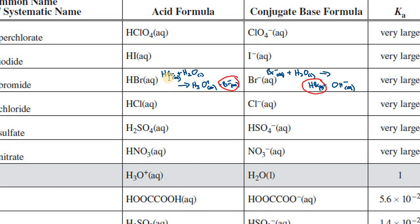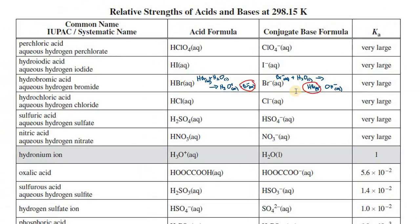So if this is a strong acid, that means this reaction happens very very well. That means this must be a weak base. So this reaction doesn't happen very well. So let's take that idea back into the big picture here.